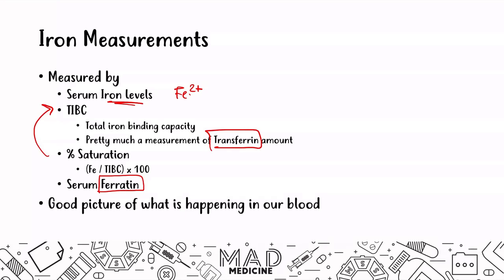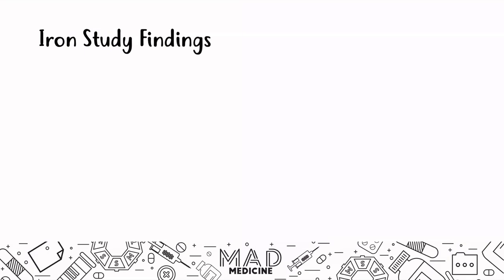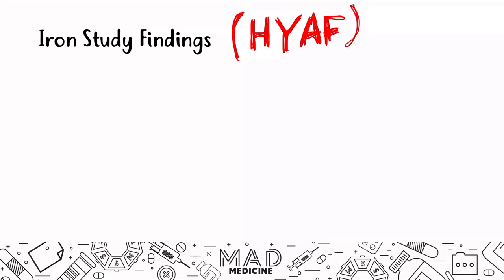Let's talk about iron study findings — this is the highest yield part of the lecture. In iron deficiency, the primary problem is a decrease in serum iron. Because of this, the body — macrophages in the bone marrow, gut, and liver — responds by increasing transferrin production to bring more iron into the body, leading to an increased TIBC.